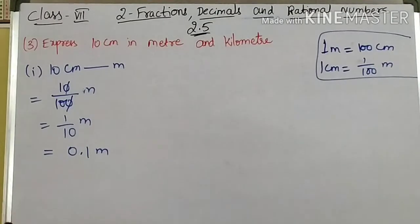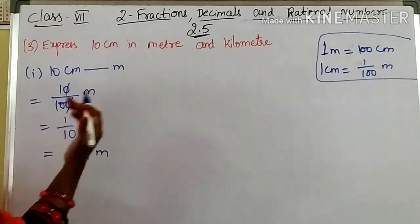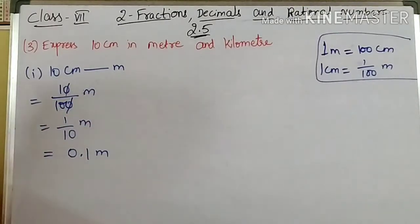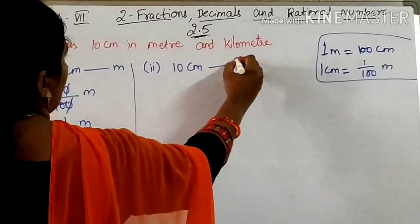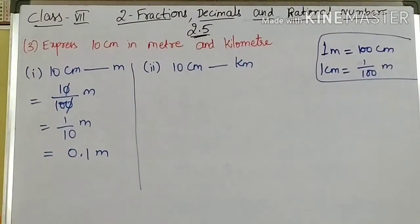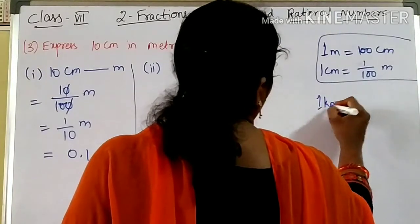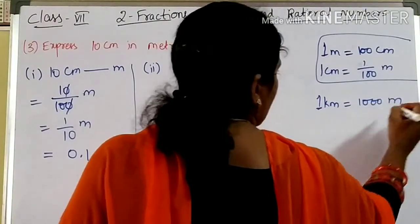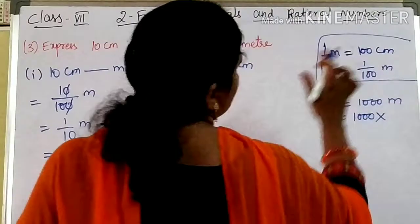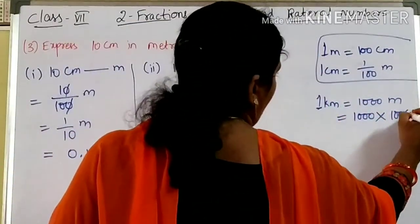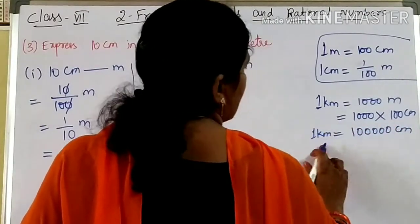One more thing to remember: when you are converting a smaller quantity into a bigger quantity, you have to divide. When you are converting bigger to smaller, you have to multiply. For the second part, 10 centimeters we have to convert into kilometers. Before that, we see that 1 kilometer is 1000 meters. Convert meters into centimeters: 1000 into 100 centimeters gives you 1 lakh centimeters. So 1 kilometer is nothing but 1 lakh centimeters.